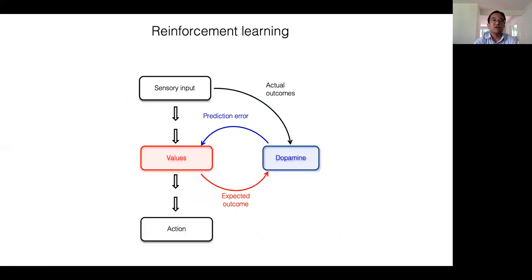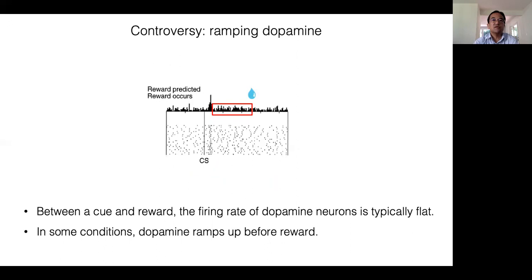This is a simple model of decision making. The brain assigns value to different actions or options, and based on this representation of values, the animal chooses the best action. At the same time, the predicted value can be compared with the actual value that the animal received. When the discrepancy is detected, then the brain can use this prediction error signal to update the value representation. By repeating this process many times, the value representation gets refined and the decision making gets better. A large body of evidence supports that dopamine neurons signal reward prediction errors and substantiate reinforcement learning in the brain.